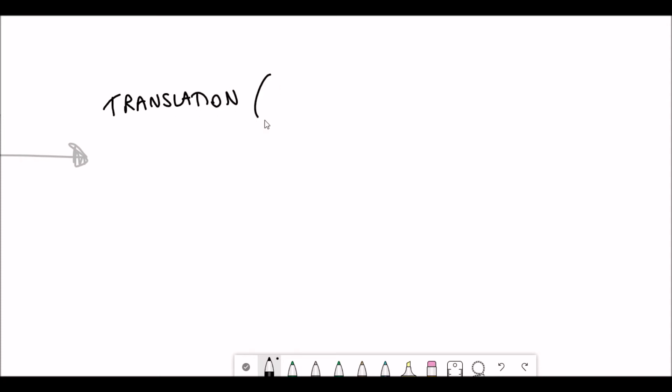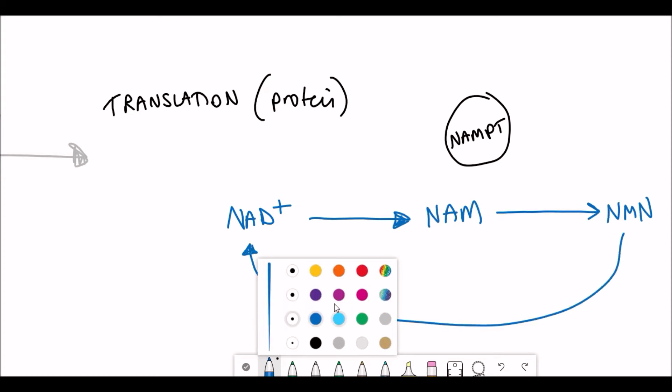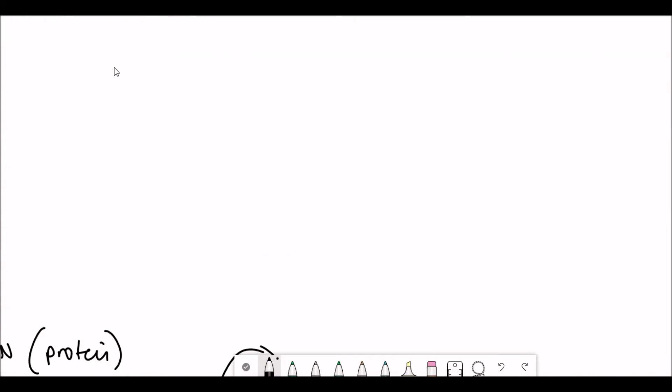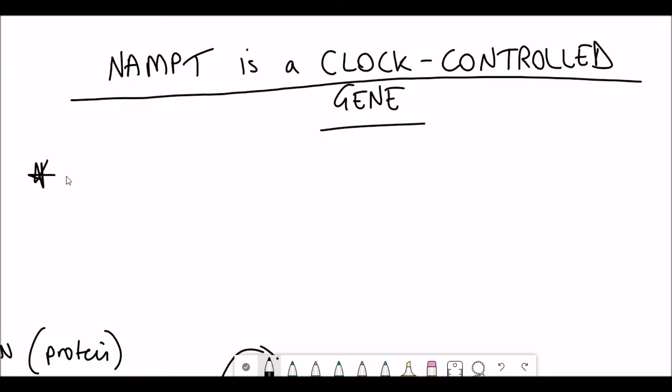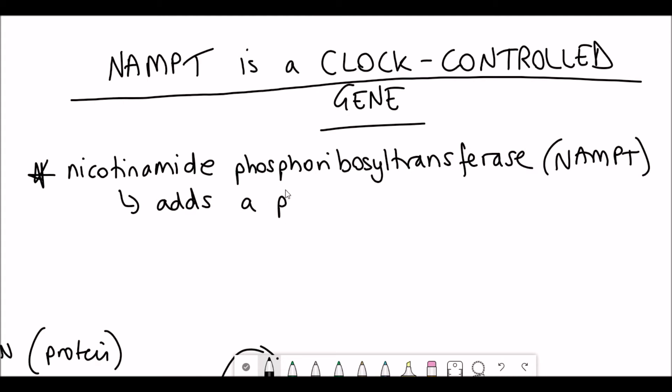So what is NAMPT? Well, as I mentioned in a previous video talking about NMN, NAMPT is a protein that converts nicotinamide into NMN and then NMN can then be converted into NAD+. So as a consequence of being regulated by CLOCK and BMAL1, the expression levels of NAMPT also fluctuates during a 24 hour cycle. And so this has consequences for understanding the levels of NAD+ throughout the day as well.